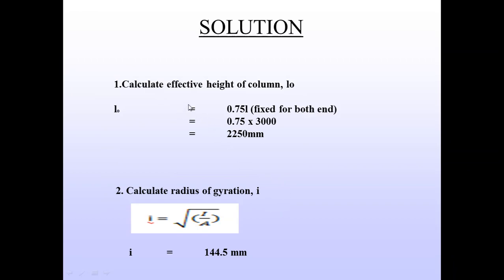We calculate the effective height of the column based on end conditions — whether fixed-fixed, fixed-pin, or pin-pin. In this example, the end condition is fixed for both ends, so the effective height of the column is equal to 0.75L. Therefore, the effective height is 2250 mm. Then we calculate the radius of gyration, i, which is equal to the moment of inertia divided by the area of the column.